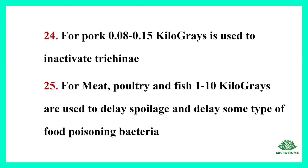For pork, 0.08 to 0.15 kilograys is used to inactivate Trichinella. For meat, poultry, and fish, 1 to 10 kilograys are used to delay spoilage and delay some types of food poisoning bacteria.